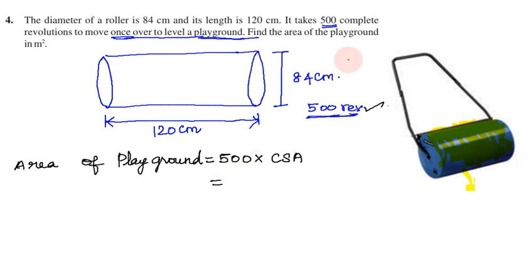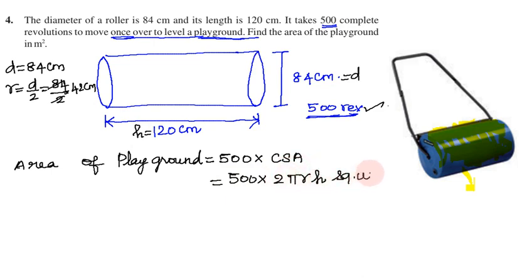First, diameter is 84 cm, so this is diameter is 84 cm. Radius, diameter divided by 2, is 42 cm. So this is the length of cylinder height. So 500 into curved surface area is 2πrh square units.